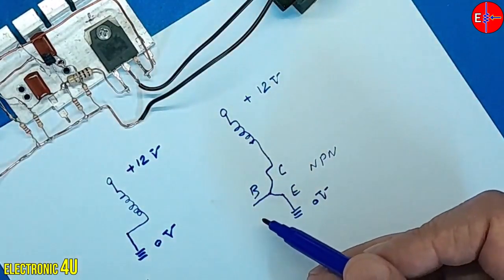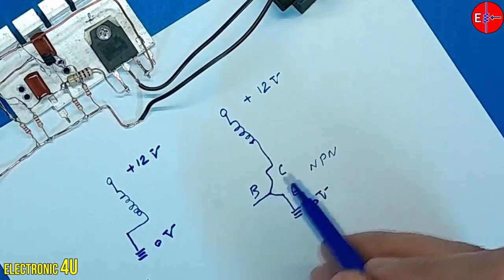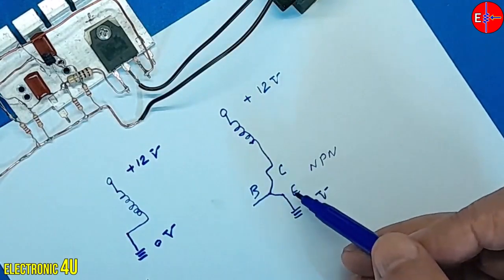Under normal conditions, with no voltage on the base, the transistor is in a cutoff state, implying no connection between the collector and emitter.